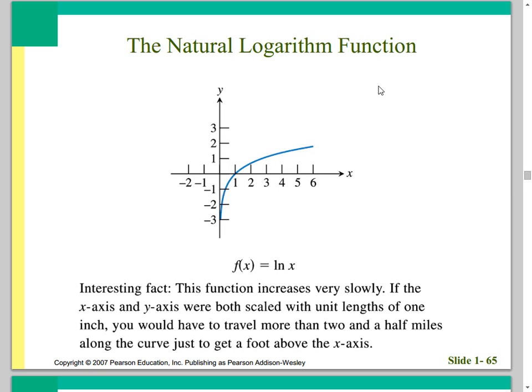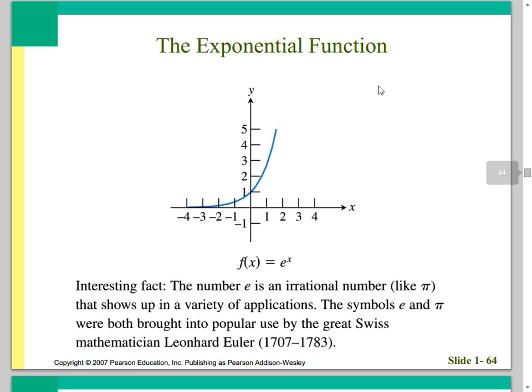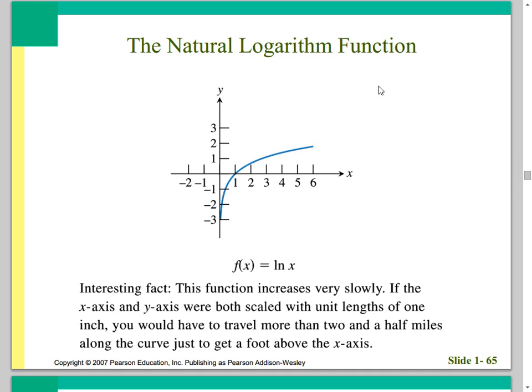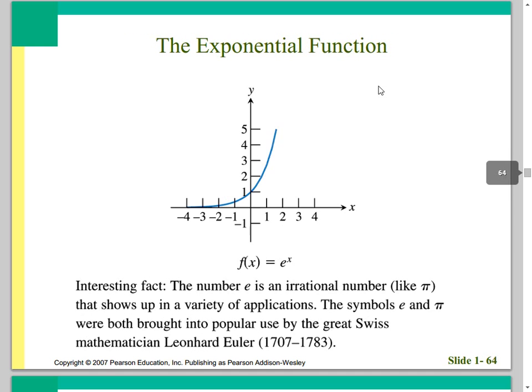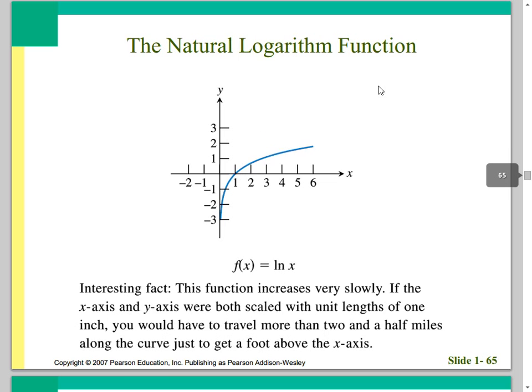We also have the natural log function, f(x) = ln(x). This function increases very slowly — if the x and y axes are both scaled with unit lengths of 1 inch, you would have to travel more than 2.5 miles along the curve to get a foot above the x-axis. The exponential function and the natural log are inverse operations of one another, which means they reflect across the identity function.